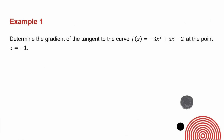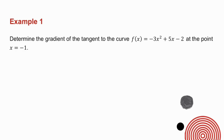Example number one: determine the gradient of the tangent to f of x at the point x equals minus 1. Remember, a gradient is a derivative. So if you are asked to find the gradient of a tangent to a curve, you get the derivative of f of x and then you want to know what it is when x is minus 1.